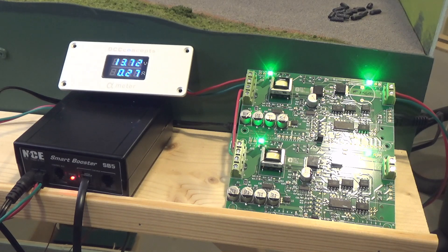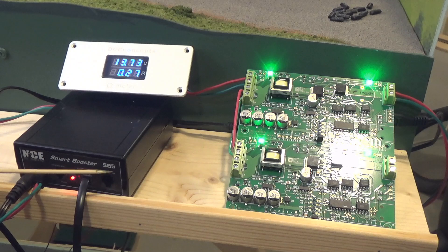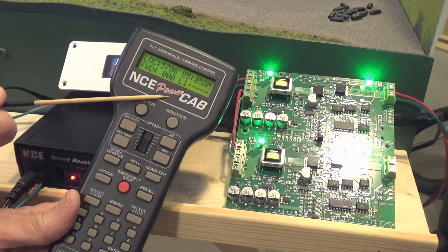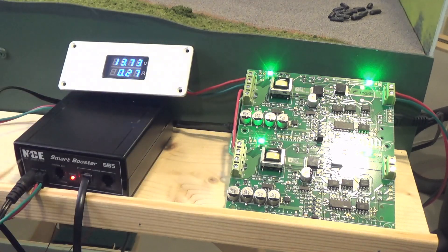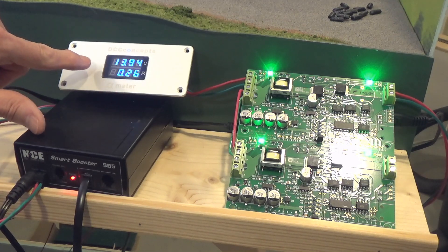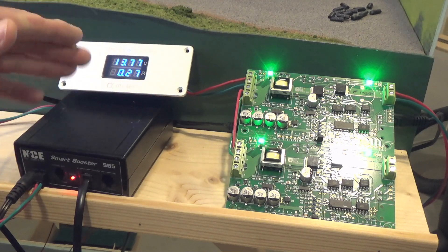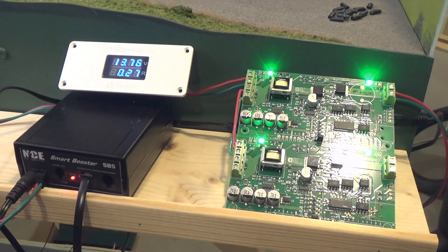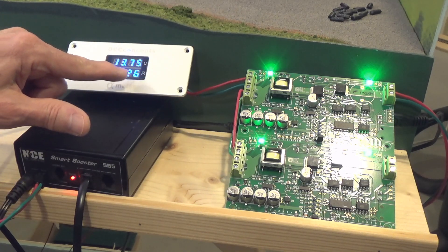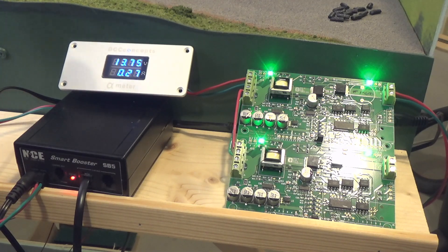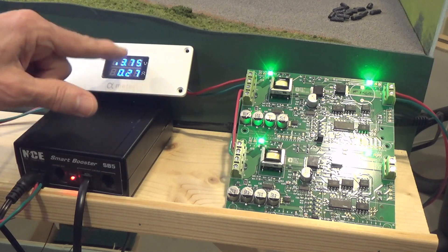First, I want to show you what I have set up here for the test. I've got an NCE Smart Booster SB5. I showed in a previous video how to convert the NCE Power Cab to a 5 amp system using the SB5. The power goes out into one of these DCC Concepts alpha meters. As you can see, we're seeing 13.76 volts going out to the track and 0.26 amps being drawn. I have eight sound-equipped locomotives on the track just sitting there idling, so they're not pulling a lot of amperage.